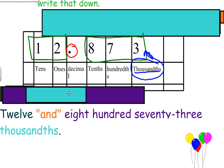And we now have written a decimal number in word form: twelve and eight hundred seventy-three thousandths. I hope that helps you out. Have a wonderful day.